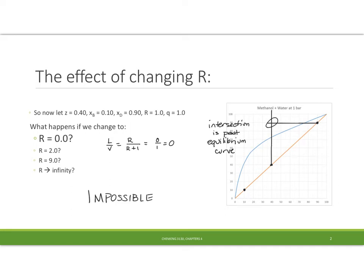Okay, so you've had a chance to do this. Let's look at the various cases. Some of you looked at the case where r is equal to 0. And when r is equal to 0, l over v is equal to 0. So the line is horizontal and the intersection is past the equilibrium curve. We can't cross the equilibrium curve. Nature does not allow that. So therefore this case is impossible.